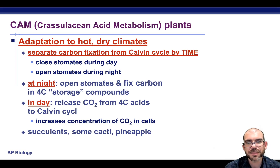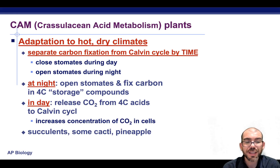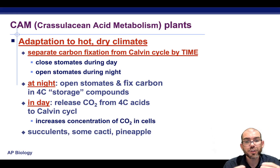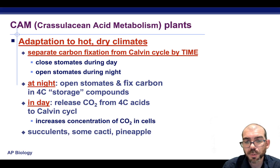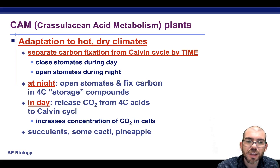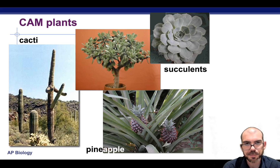The second evolutionary adaptation is called CAM, seen in exceptionally hot and dry climates. This separates carbon fixation from the Calvin cycle by the time of day. Stomates stay closed during the day to prevent excessive evaporation and open at night to enable gas exchange. Since light reactions can't occur at night, these plants fix all their carbon at night with stomates open, store it, and then during the day when there's light they regenerate all the energy used during the Calvin cycle and perform only the light-dependent reactions. Examples include cacti, pineapple, and succulents.